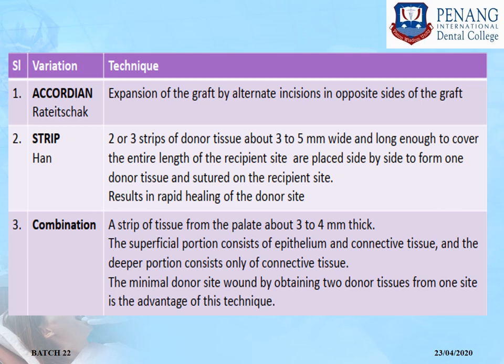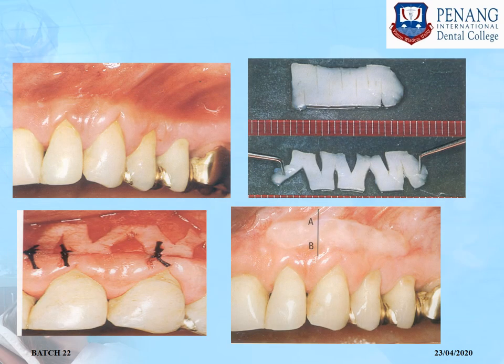There are varying techniques such as the accordion technique, strip technique, and combination technique, where the graft is extended by giving alternate incisions on opposite sides. The graft taken from the palate has incisions given on opposite sides alternately, which increases the width of the graft. When pulled, the size of the graft becomes larger, and this graft is then transferred to the recipient site.